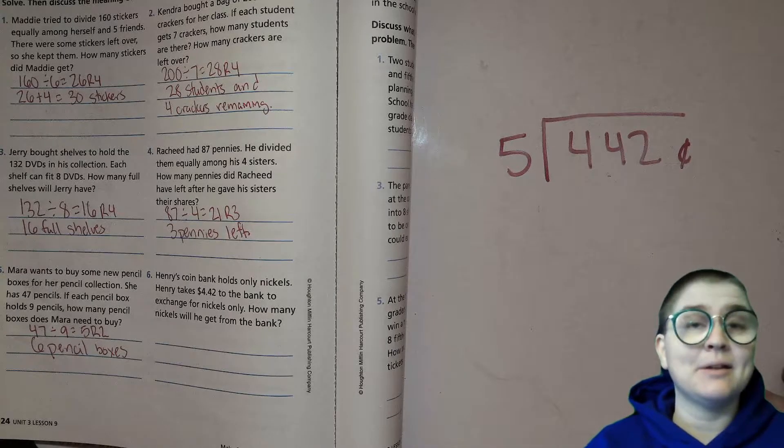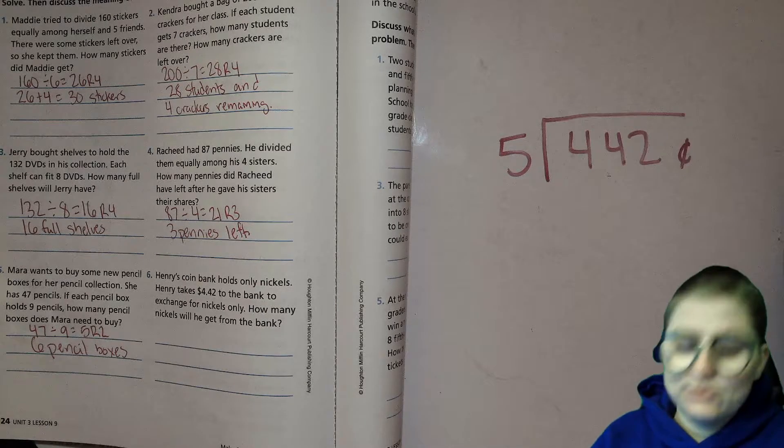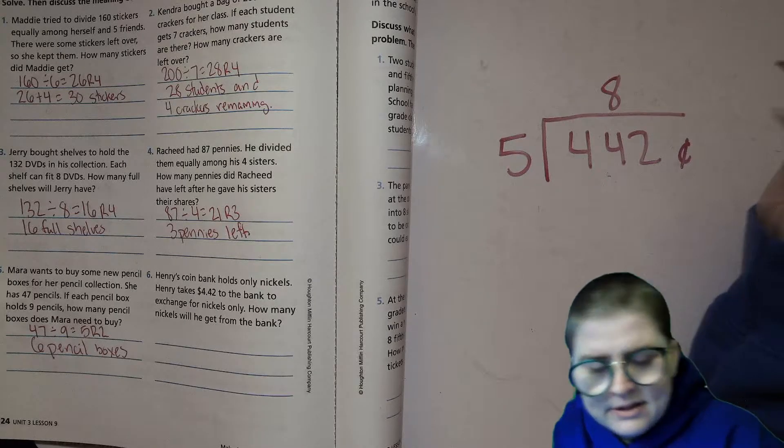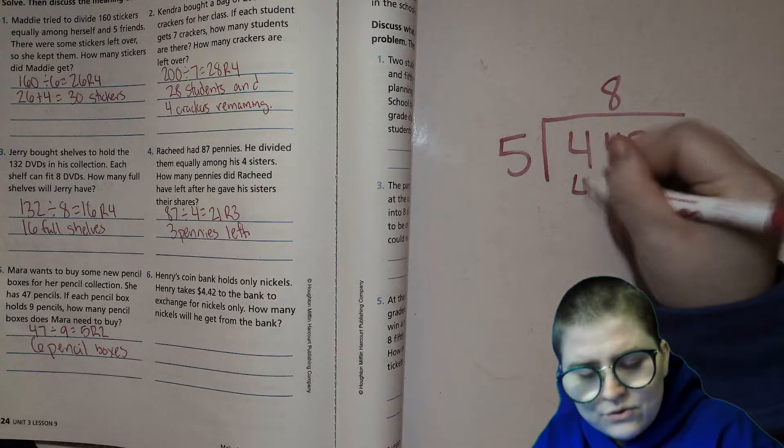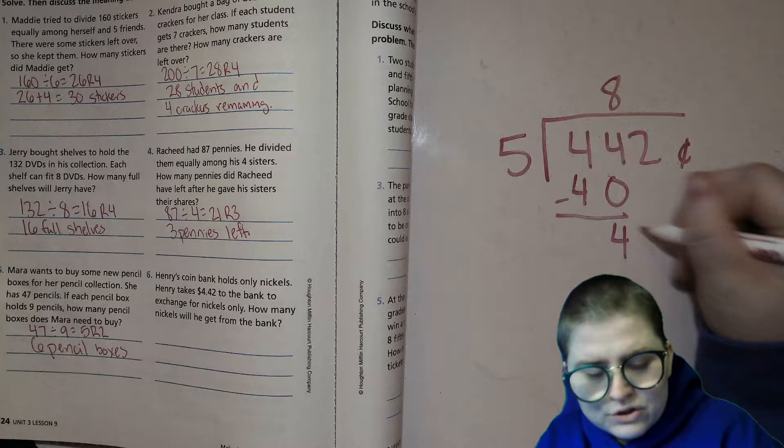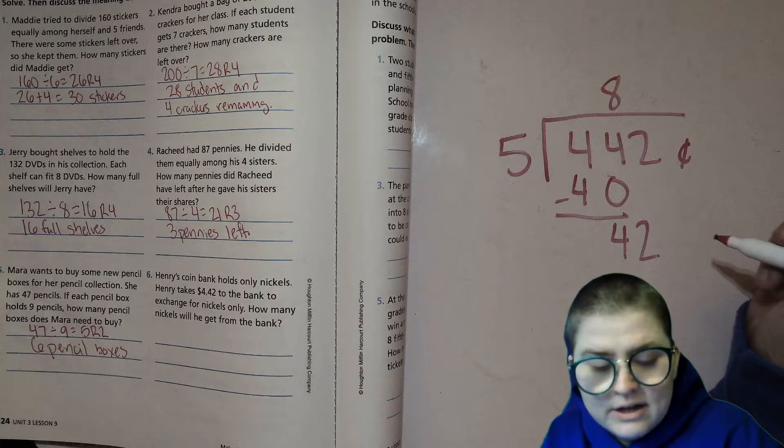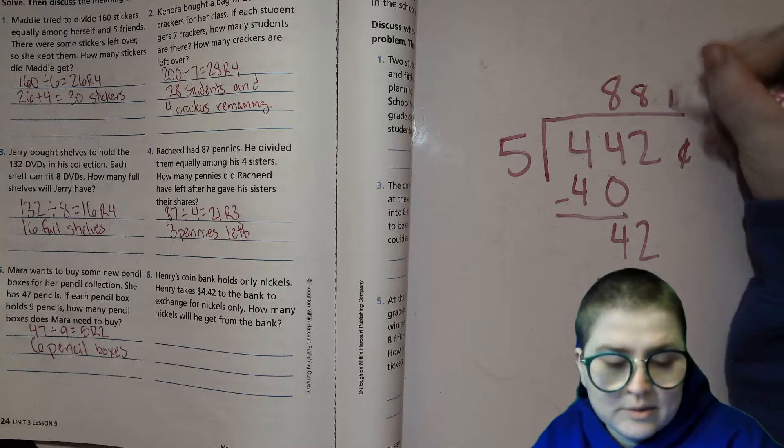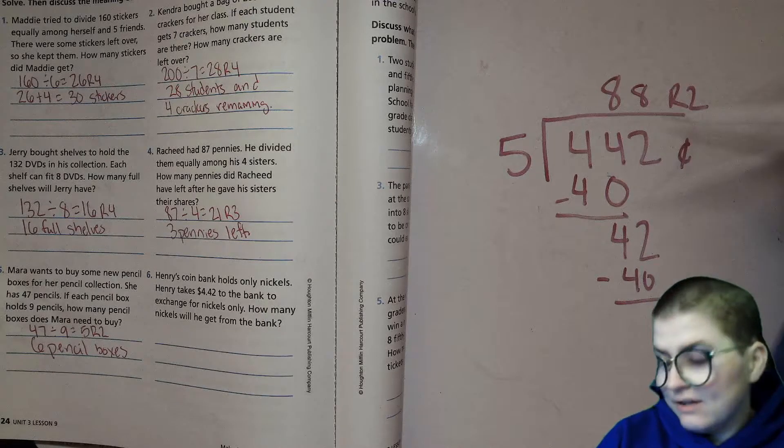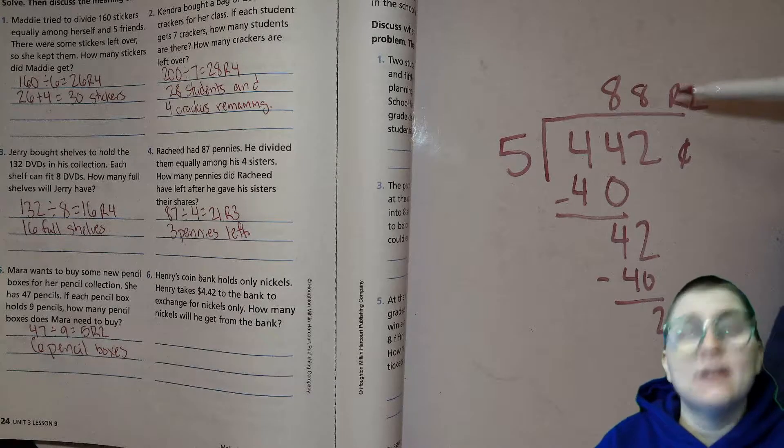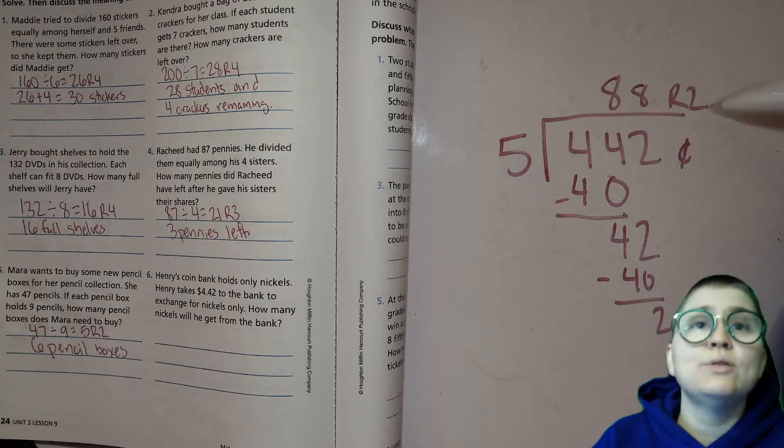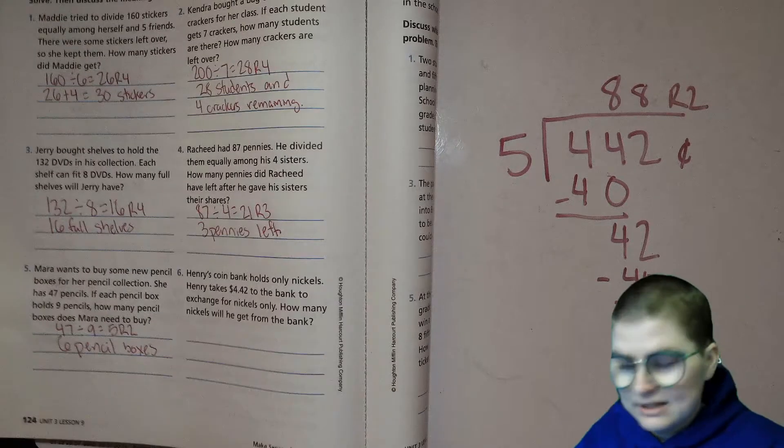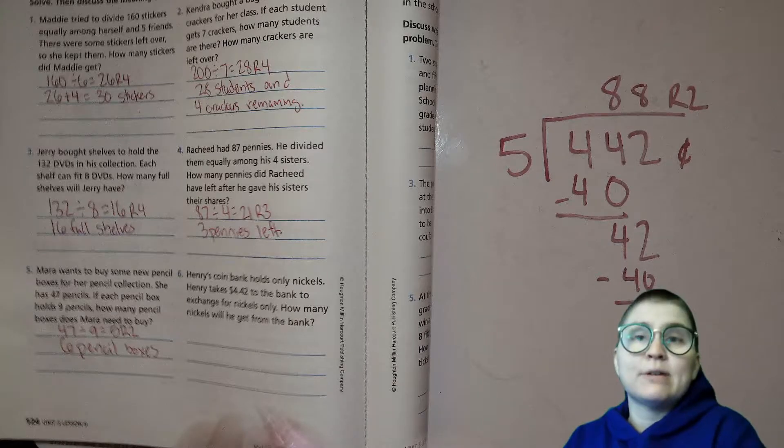So 5 goes into 44 eight times and you get 40, and then you have 42 left over. 5 goes into 42 eight times again, 40, and you have 2 remaining. So remainder 2. This means that to get all of his money back he will get 88 nickels and have 2 cents left over. So how many nickels will he get? He will get 88 nickels. The remainder doesn't matter, I mean maybe he'll give those pennies to one of those take a penny containers.